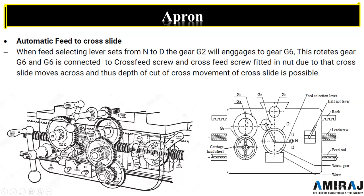Here you can see there is a separate gear arrangement for the cross feed, which is the power feed. There is a single power shifter and a separate power screw feed. This is the longitudinal feed. The cross feed screw fits in the nut, which causes the cross slide to move across, making cross movement and depth of cut possible.